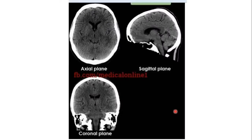When performing a brain CT scan, there are two types: the plain CT scan without contrast, and the brain CT scan with IV contrast. We give IV contrast to detect pathology such as inflammation, tumor, or any area of blood-brain barrier breakdown. Any abnormal enhancement of the brain indicates the blood-brain barrier has been broken — whether due to inflammation, tumor, trauma, or other causes.